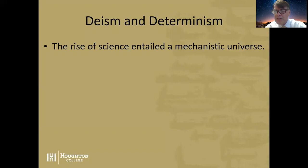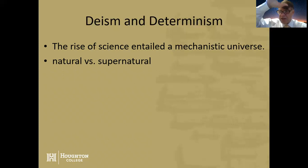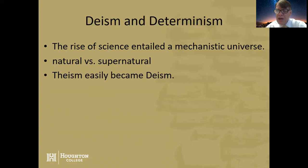This framework created a distinction between the natural world, the book of nature as Galileo put it, and the supernatural world, which is the world of angels and God. In that context, what was theism easily became deism. Theism is the belief not only that God exists, but that God is involved in the world. Deism is the idea that God exists and created the world, but God is no longer involved in the world. In a deistic universe, there are no miracles. Thomas Jefferson, for example, would have been a deist.